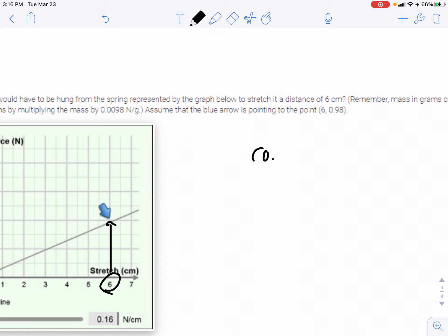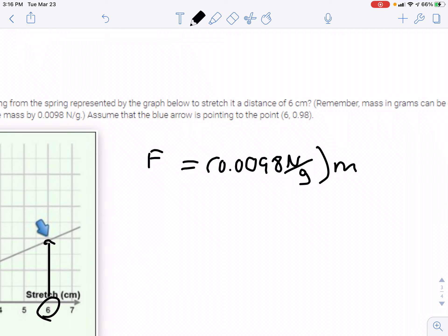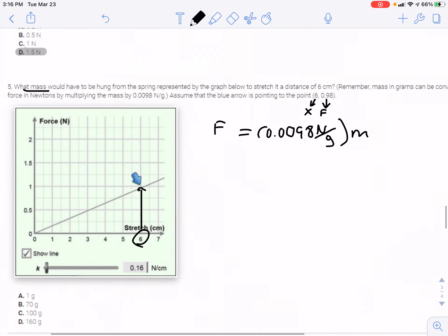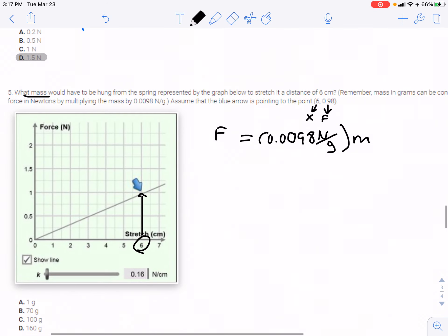Okay, so 0.0098 newtons per gram times any mass can convert to force, so this is a conversion. The mass in grams would cancel here leaving you force in newtons. Assume the blue arrow is pointing at 6.98, so 6 would be the displacement stretch and 0.98 would be the force.